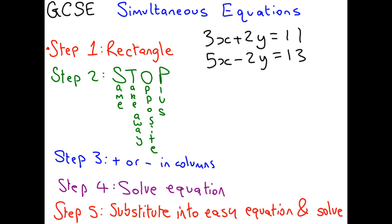Step 1 is rectangle. What rectangle means is you look for, in these columns, letters that have the same coefficients. The coefficient is the number in front of the letters. Now, can you see that with the Y's, the 2's are the same? One has got a plus and one has got a minus, but the rectangle step says put a rectangle around the ones that are the same. Because they've got 2 and 2, you put a rectangle around them. You also want your rectangle to cover the signs.